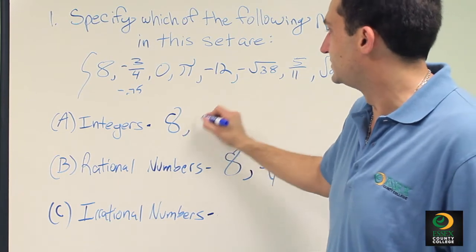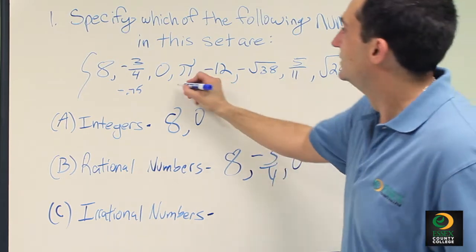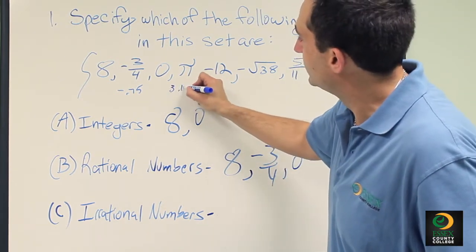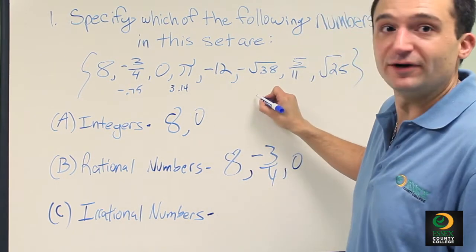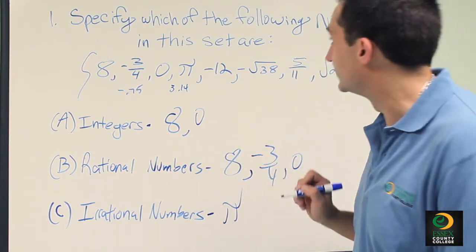0 is an integer by definition, and it's also a rational number. Pi, the definition is 3.14, but it repeats on forever, so it doesn't make it an integer or a rational number, it's the first irrational number.